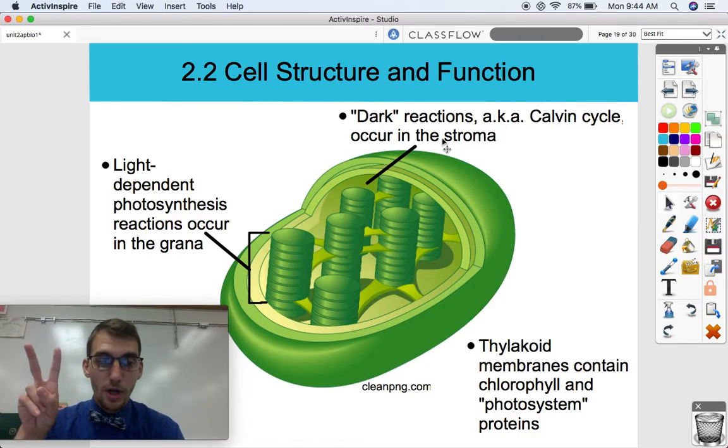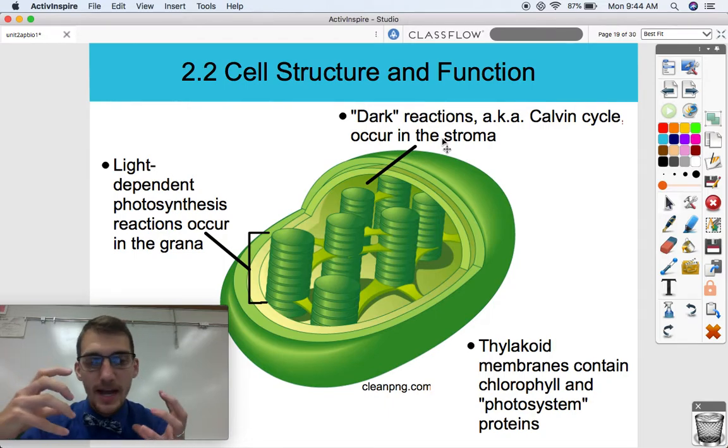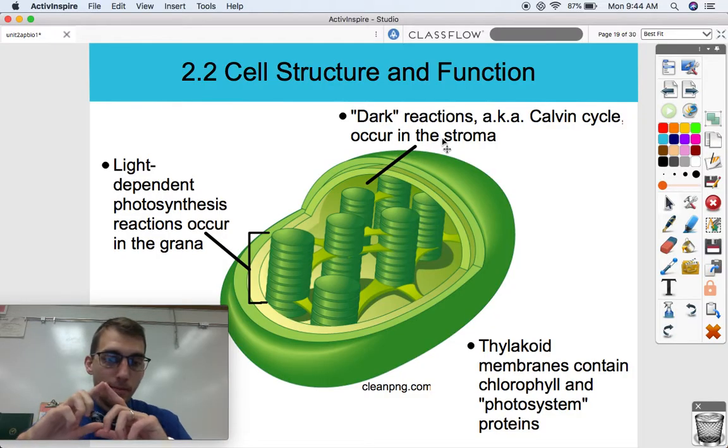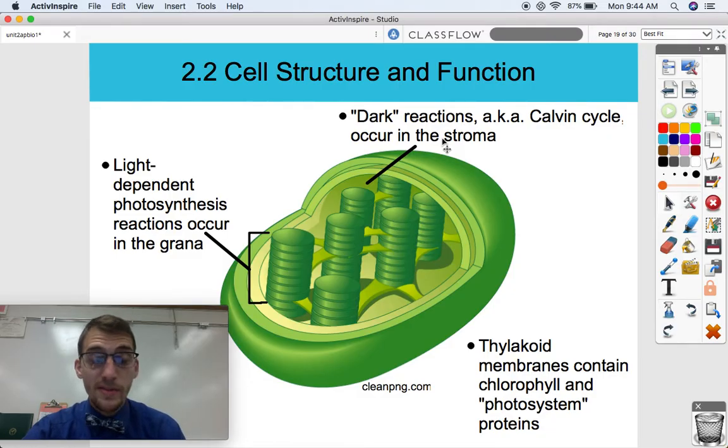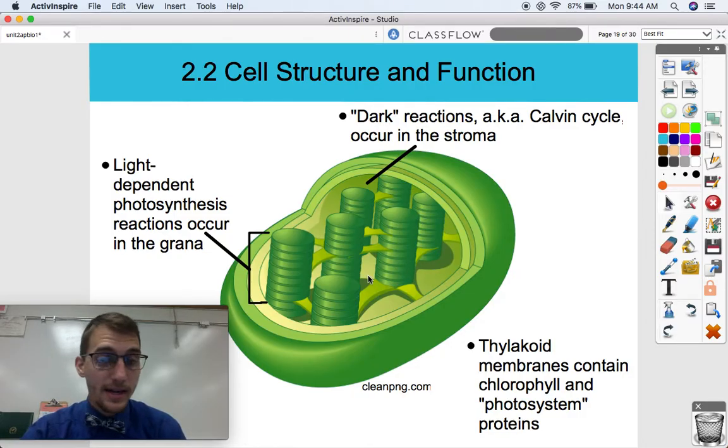But what we call dark reactions or what we call the light-independent reactions that take carbon dioxide in the products from the light-dependent reactions and are able to produce those six carbon glucose molecules, that's called the Calvin cycle. That occurs within the stroma. So that's still within the inner membrane of the chloroplast, but it's outside the thylakoids and outside the grana. So light-dependent reactions happen in the thylakoid membranes and the dark reactions occur within the stroma outside of the thylakoids.